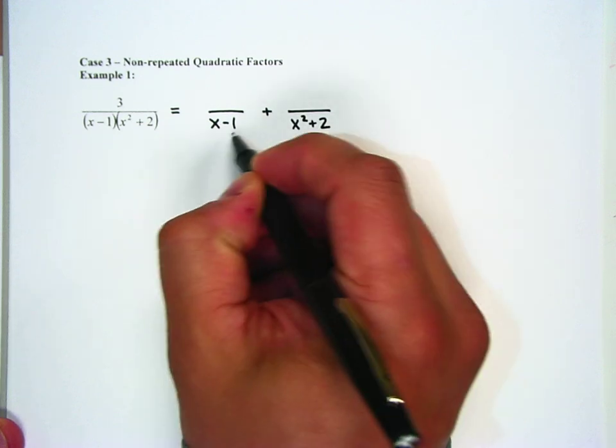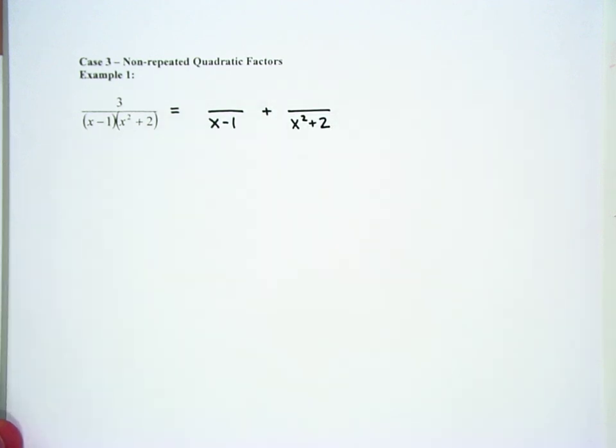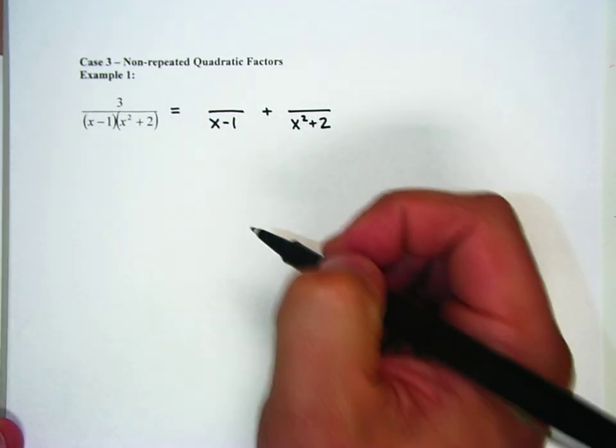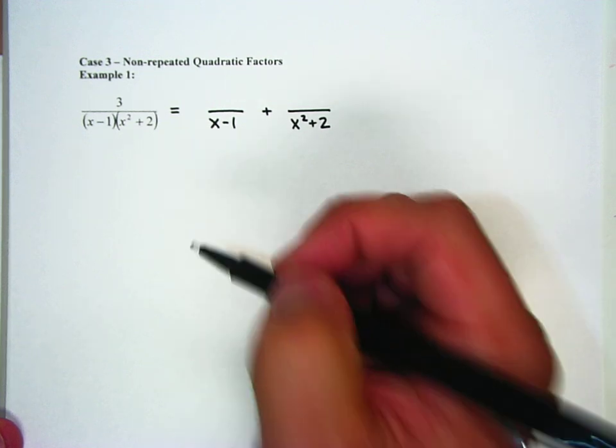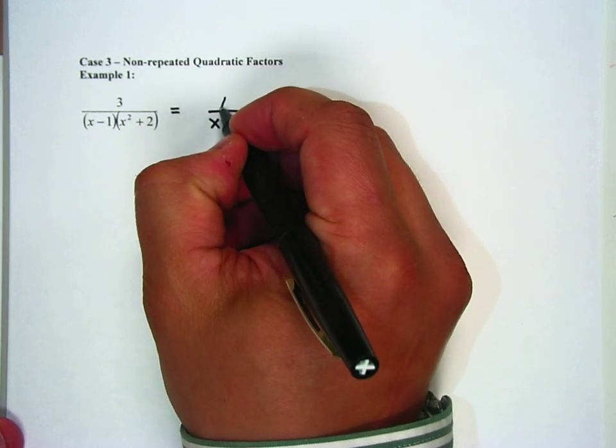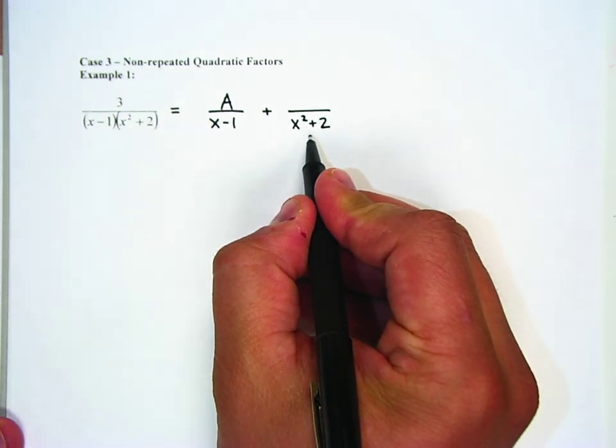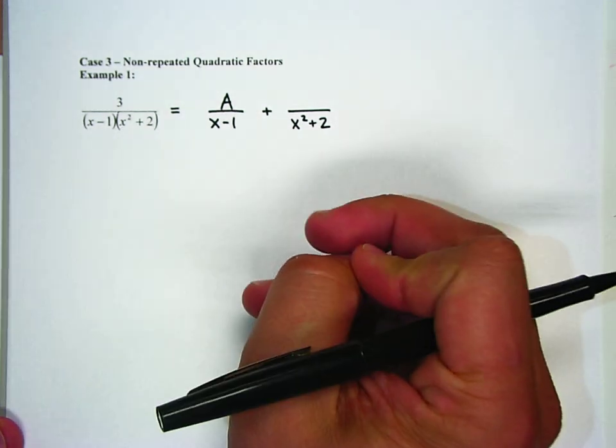We're going to break it up into two individual fractions. We put our denominators of x minus 1 and x squared plus 2. Now because x minus 1 is a linear factor, it's not x squared, it's just x minus 1, we're just going to put an A above it.